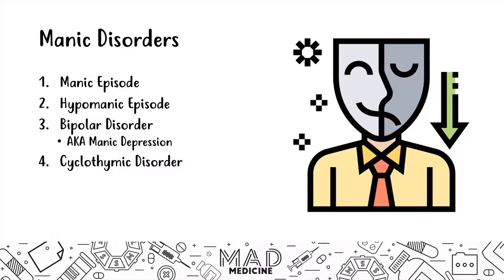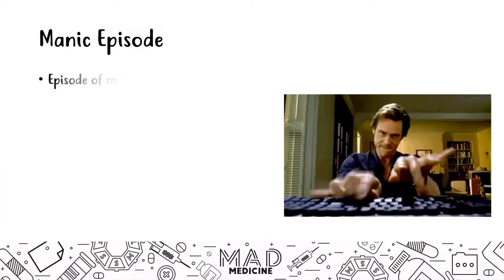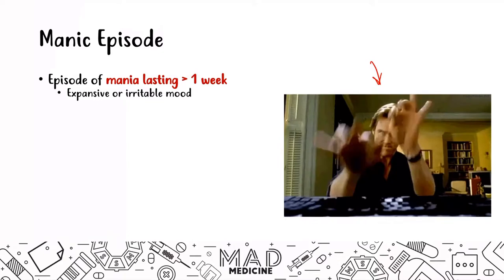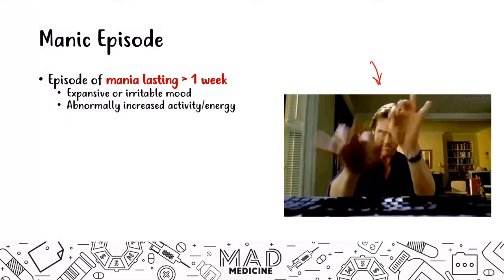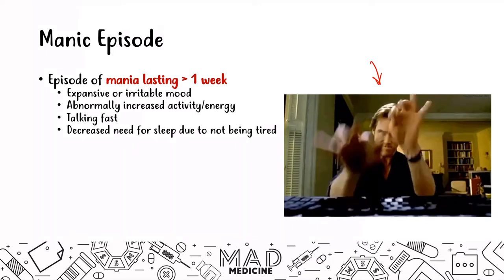A manic episode is simply an episode of mania that lasts greater than one week. Someone suffering from mania will have a very expansive or irritable mood and an abnormally increased activity and energy level. They feel like they can do everything at once. They talk fast and usually have a decreased need for sleep because they don't feel tired. They also have psychomotor agitation — they have to be doing something at all times, and their mind is usually racing.